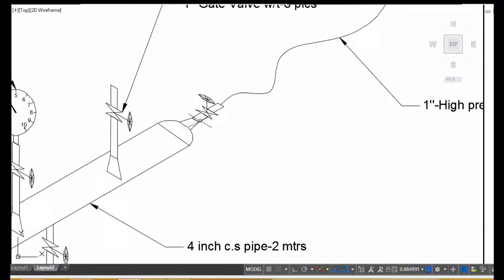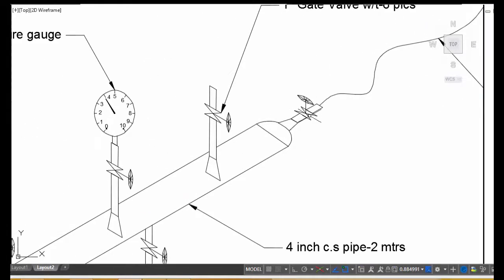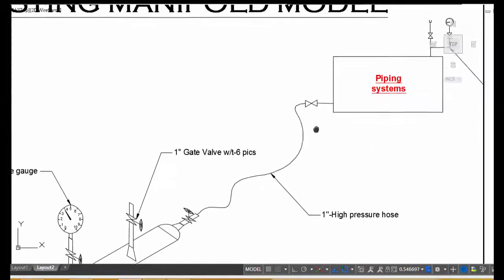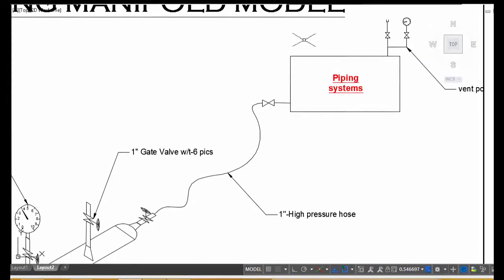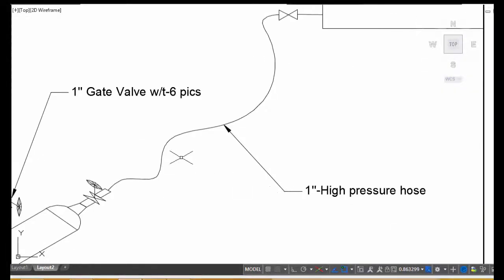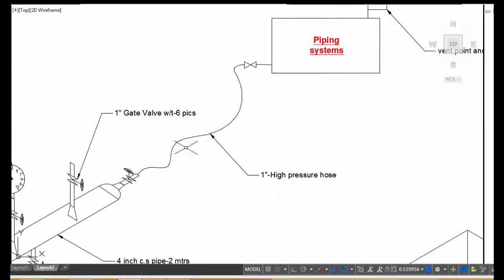One gate valve - this line is connected with the piping system as per our test package. At the lowest point, we have to connect this manifold by using a one-inch high-pressure hose.